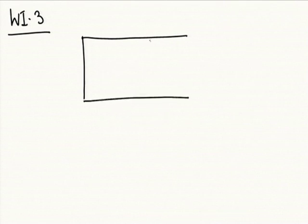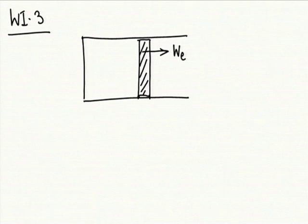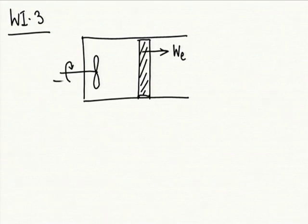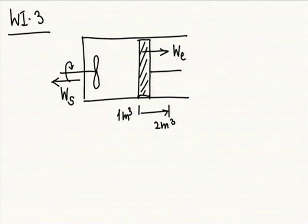So we have a cylinder-piston — one mode of work is W expansion. We also have a stirrer, giving us W stirrer. We have an initial volume of 1 meter cube and a final volume of 2 meter cube — initially 1 meter cube going to 2 meter cube. Constant pressure of 4 kgf per centimeter square. The gas is 5 kg.